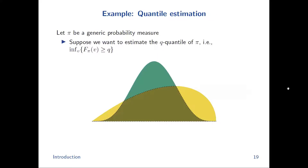The last example is quantile estimation. Quantiles are very important in statistics — given an underlying probability distribution, estimating the Q-quantile is a functional of the probability measure, not an expectation. The underlying probability distribution can be easy or very difficult to sample from.